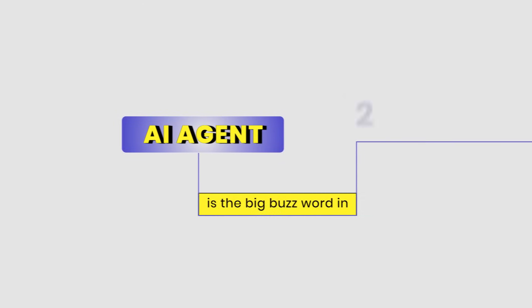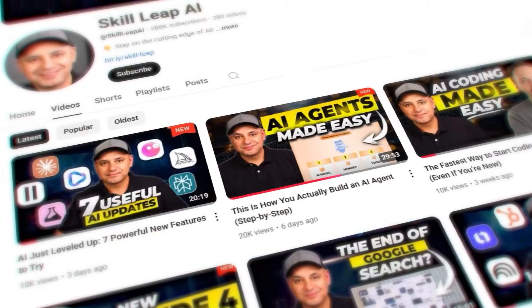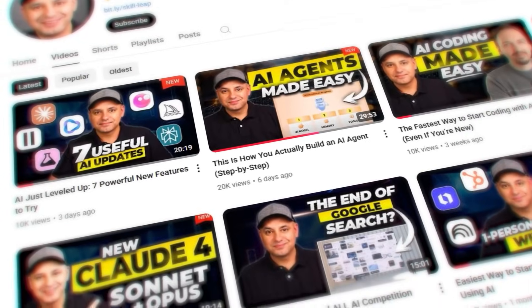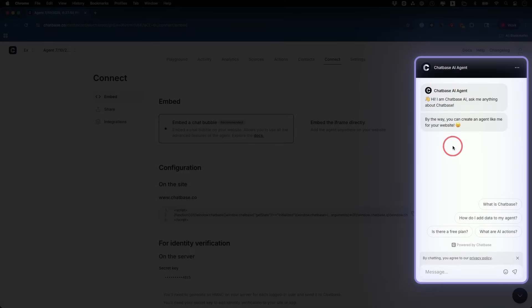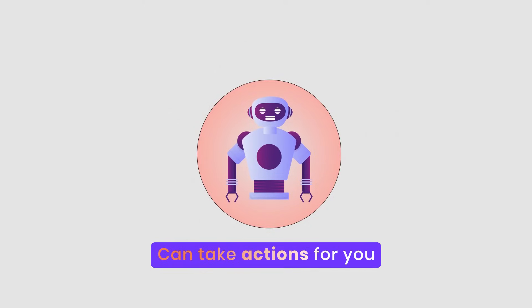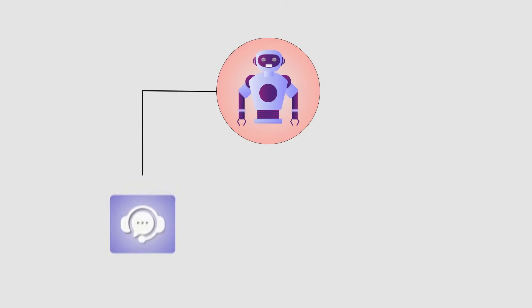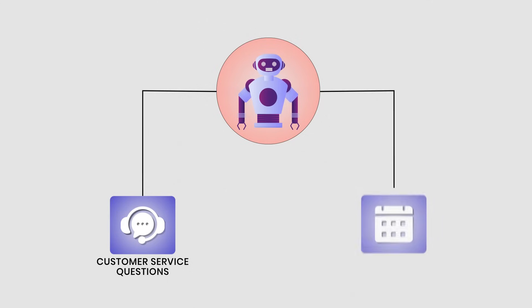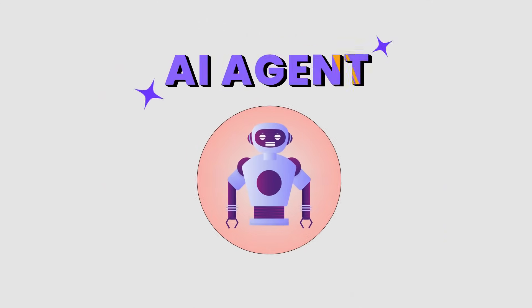AI agent is the big buzzword in 2025 in the world of AI and it's getting more useful pretty much every single week. In this video I wanted to show you a really simple way for making an AI agent that you could actually add to your website. In order to call this an AI agent it needs to have an AI at the center that could actually take actions for you like handle customer service questions or access other tools like your calendar and connect those different pieces together. That's what makes an AI agent.